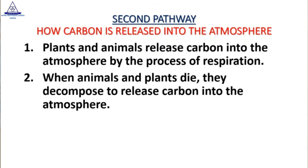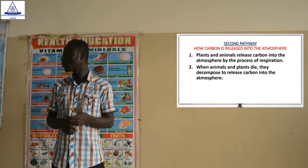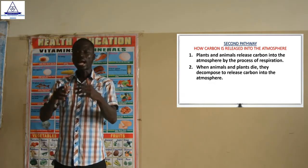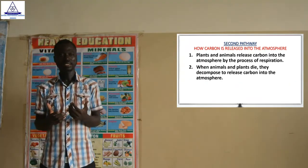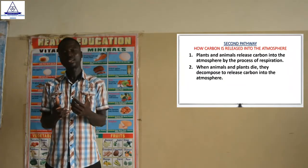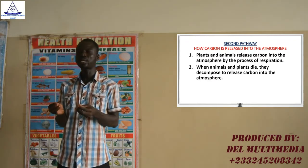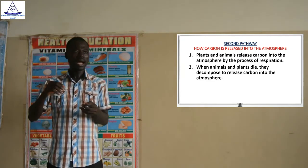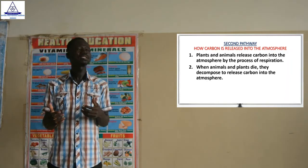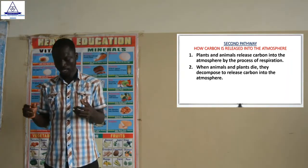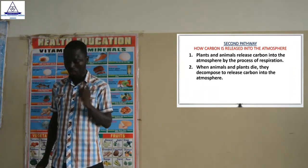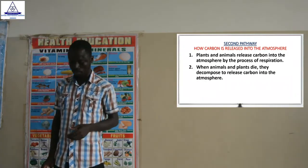The second way is that whenever animals and plants die, they decompose to release carbon into the atmosphere. When plants and animals die and begin to rot, their decay releases carbon. Since carbon is found in plants and animals, after they have died, they release the carbon which is in them into the atmosphere.